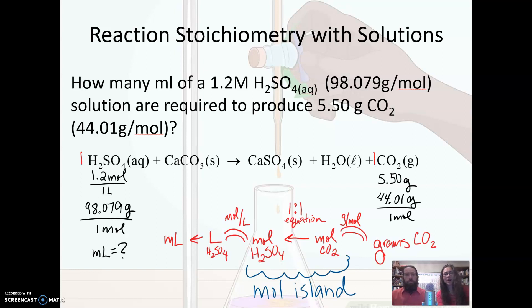So I want to just walk through kind of a roadmap of how to approach this problem. We have our balanced equation that was provided, and I like to write my data right underneath the species so I know what I have and I know what I'm looking for.